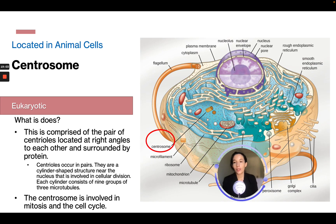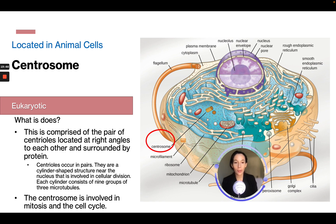The centrosome is located in animal eukaryotic cells. It is comprised of a pair of centrioles at right angles to each other, surrounded by a protein. Centrioles are cylinder-shaped structures near the nucleus involved in cellular division — each consisting of nine groups of three tubules. The centrosome is involved in mitosis and the cell cycle, and more detail will come when covering mitosis and meiosis.